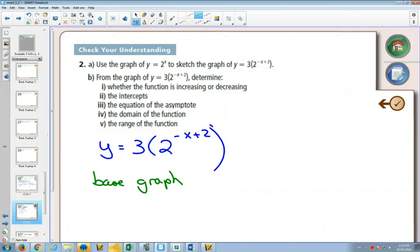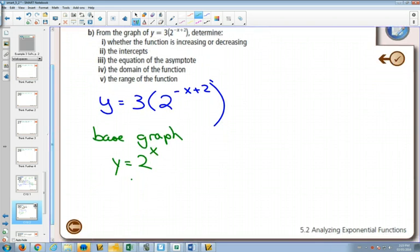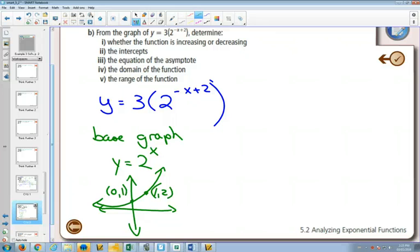It's an exponential because the x is an exponent. What's the base of this graph? 2. So there's our base graph. We can draw a quick little sketch of it off to the side. It's going to be increasing because of the 2. It's going to go through the point 0, 1 and 1, 2 with an asymptote at y equals 0.